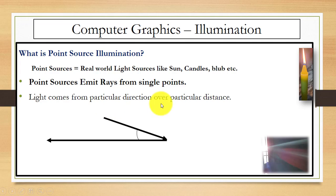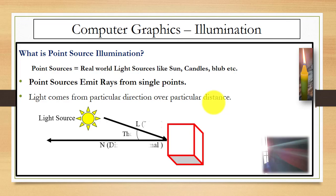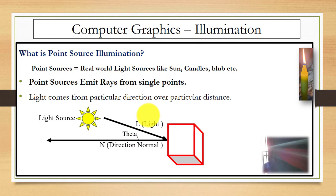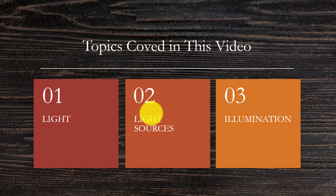Light comes from a particular direction over a particular distance. For example, you can see here: this is the source of light — the sun — and we have an object, and this is the reflecting light, that is the light direction after reflection. Here we have angle theta, also known as the incidence angle theta. When this angle increases, the incident light falling on the surface will be less.